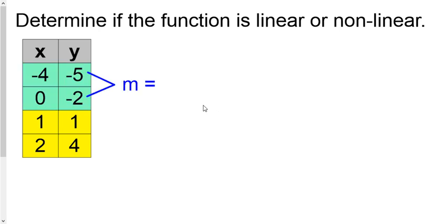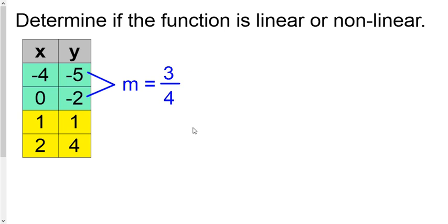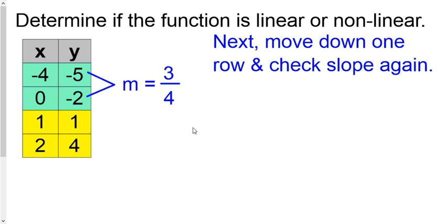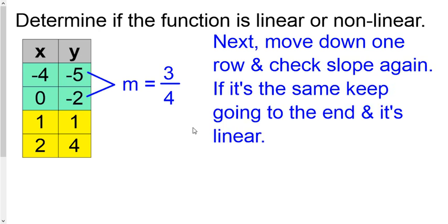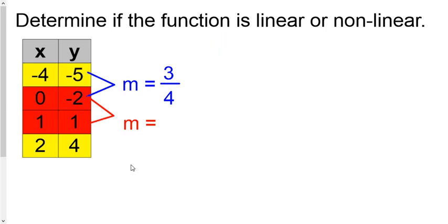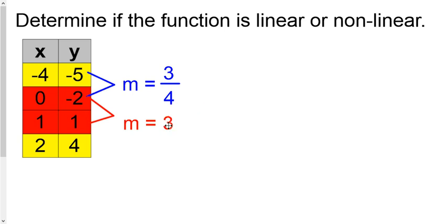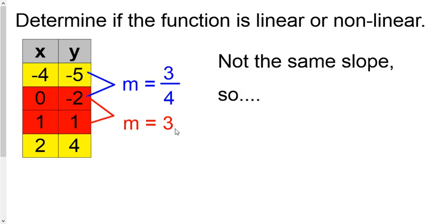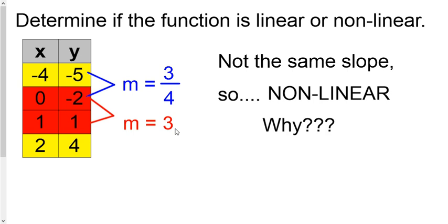Let's take a look at a nonlinear equation now. Same process: take the first two rows, plug them in, and get a slope — that'd be three-fourths. Move down one row and check the slopes again. If we get three-fourths again, we keep going until we reach the bottom of the table. But if we get a different slope, that means it's nonlinear. Moving to rows two and three, we plug them into the formula and get a totally different slope — positive three versus three-fourths up here. Not the same slope: it's nonlinear. We can stop.